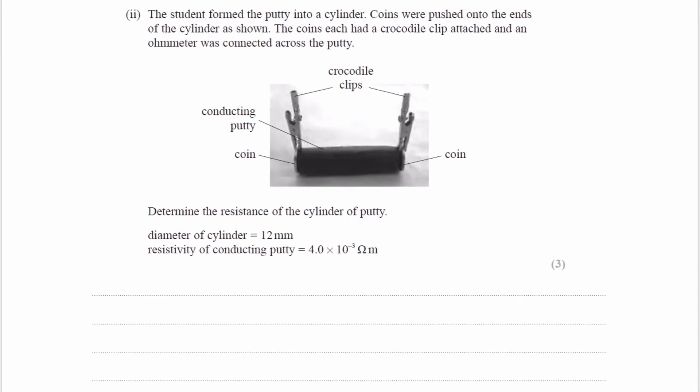For the next one, we have a cylinder made out of putty. And we're told the diameter. Put it in SI base units. And we're told the resistivity as well.